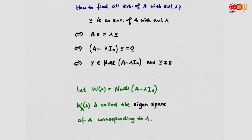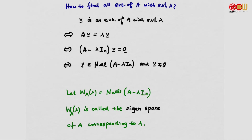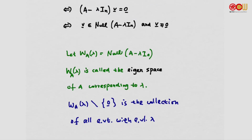We give the null space of A minus lambda identity a special name: W_A(lambda). This is the null space of A minus lambda identity, and this subspace is called the eigenspace of A corresponding to lambda. If we take W_A(lambda) and exclude the zero vector, this set is the collection of all eigenvectors with eigenvalue lambda.